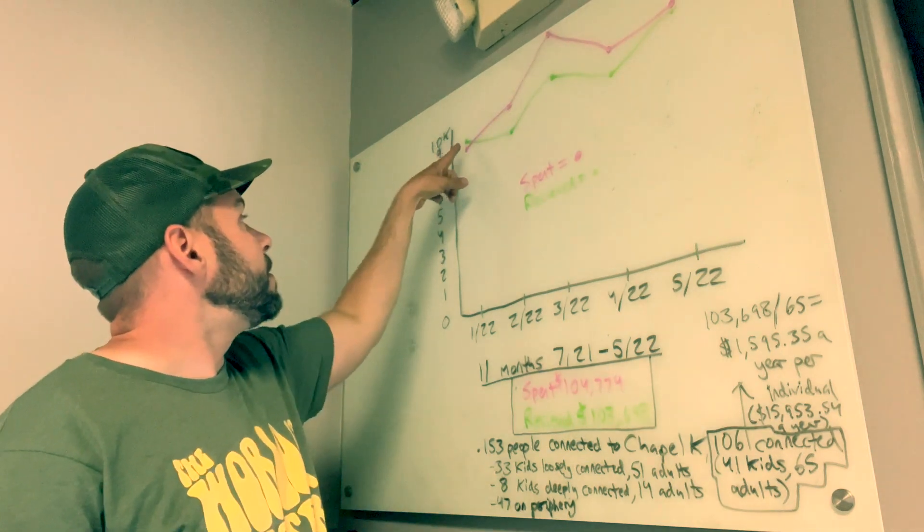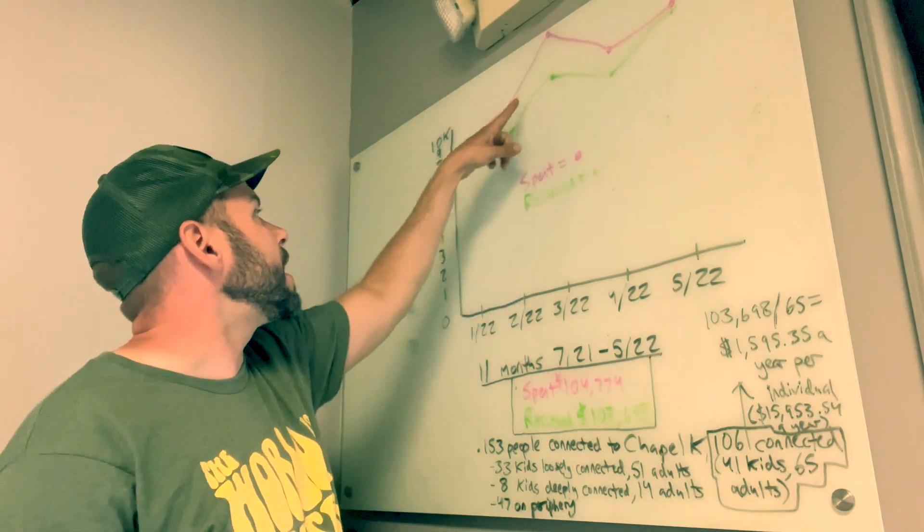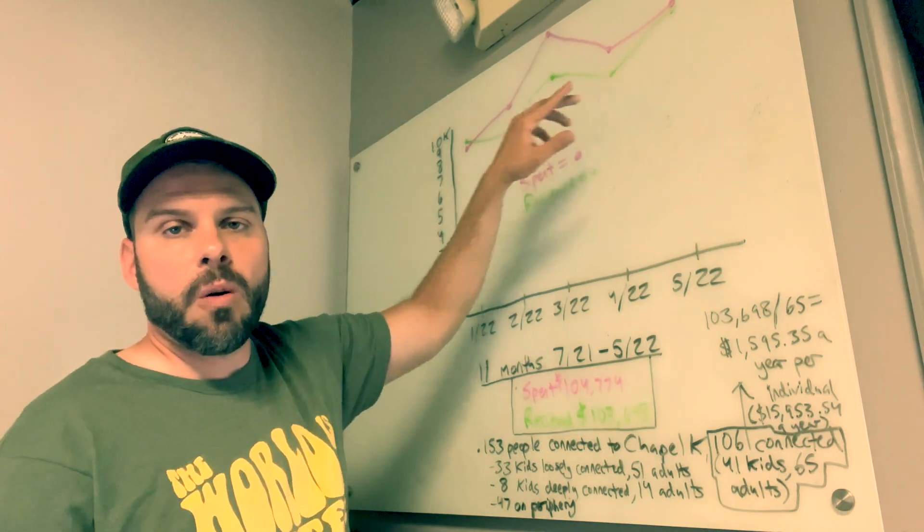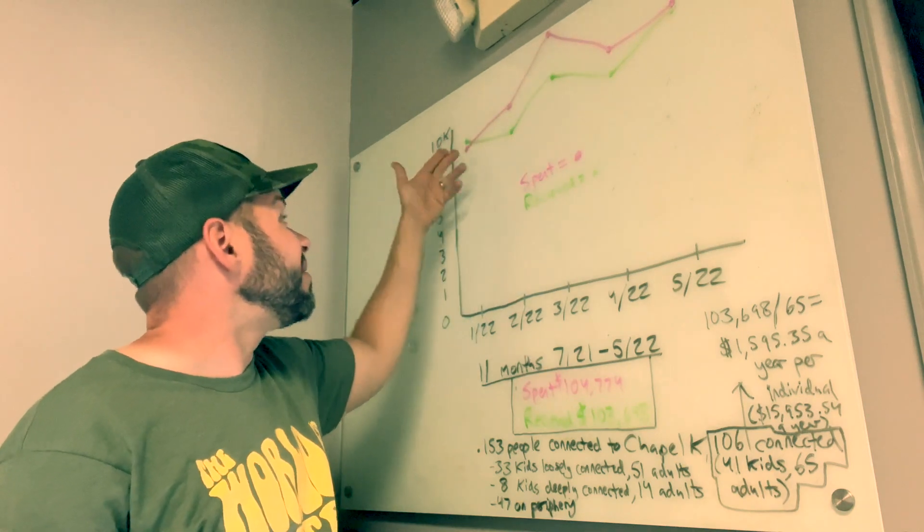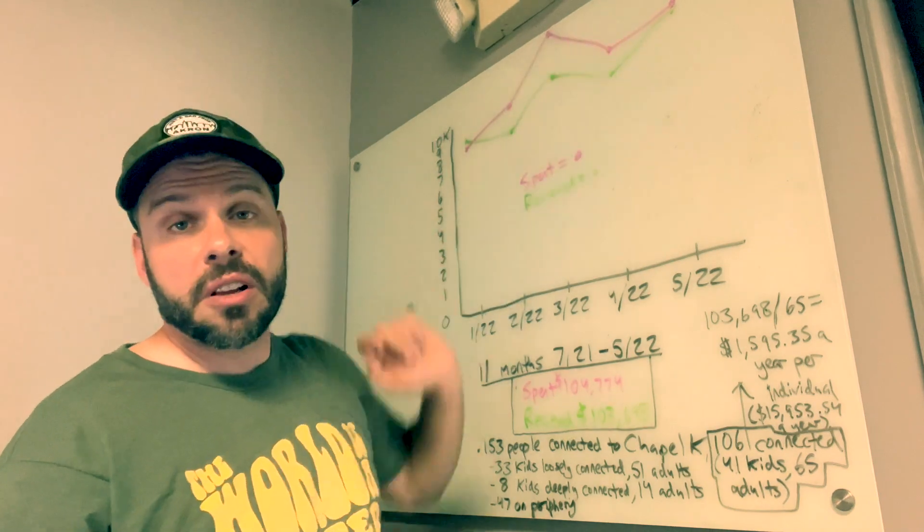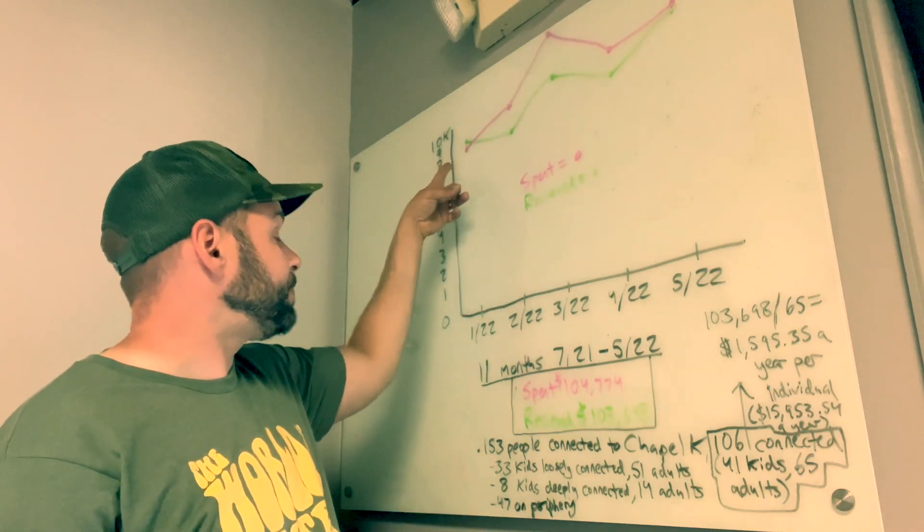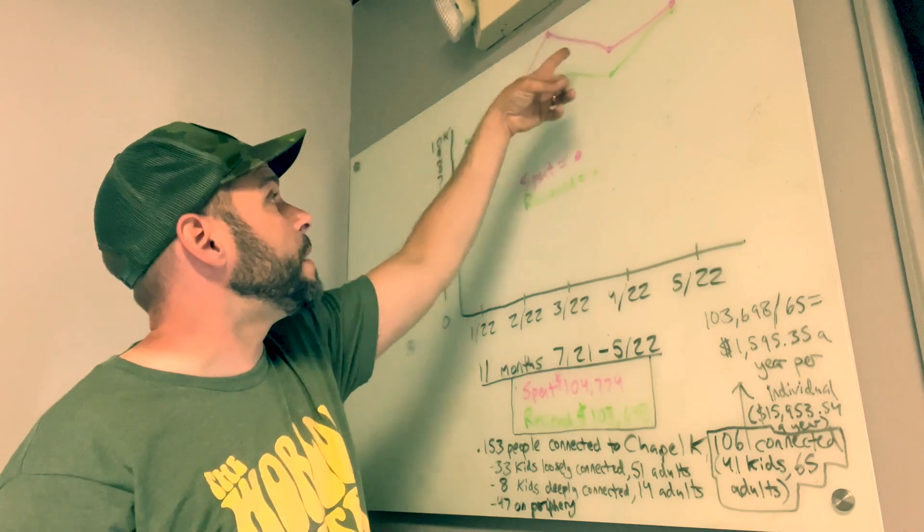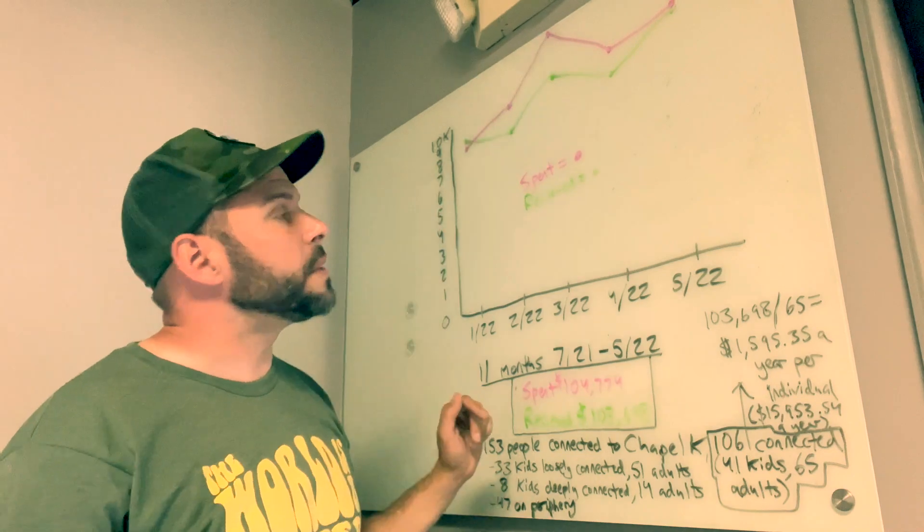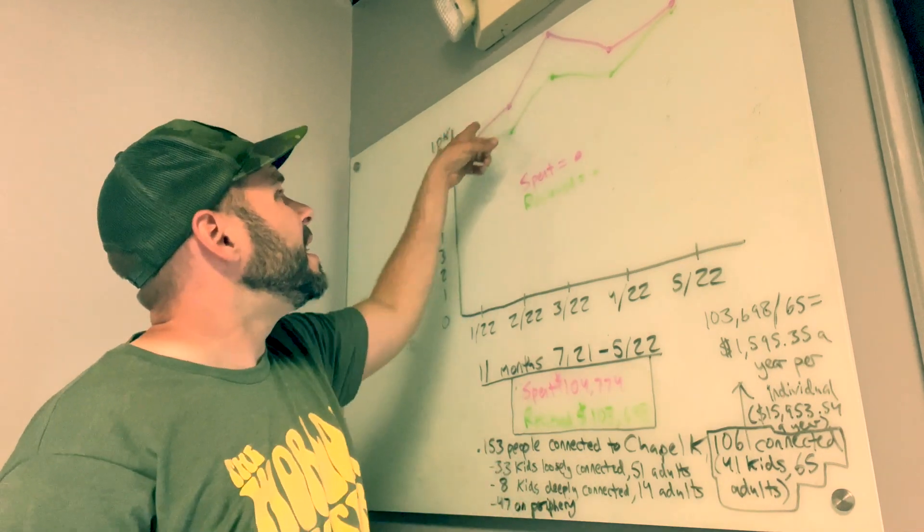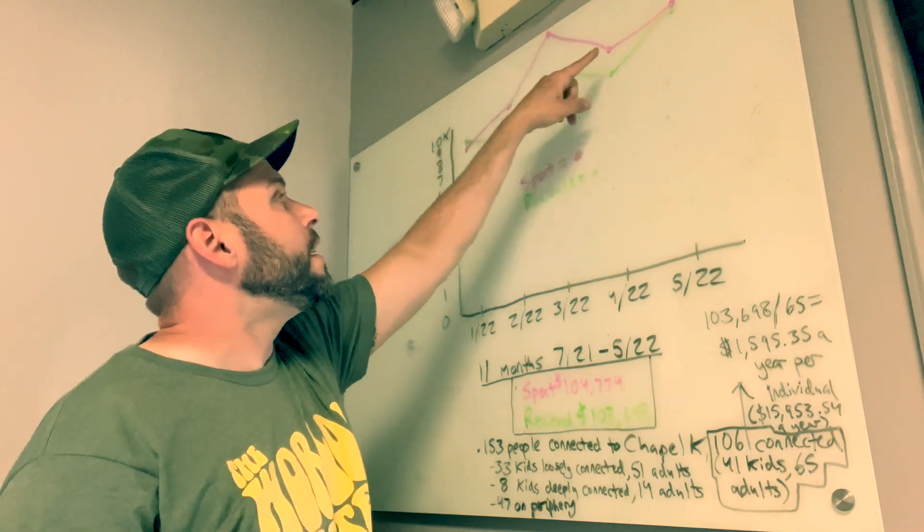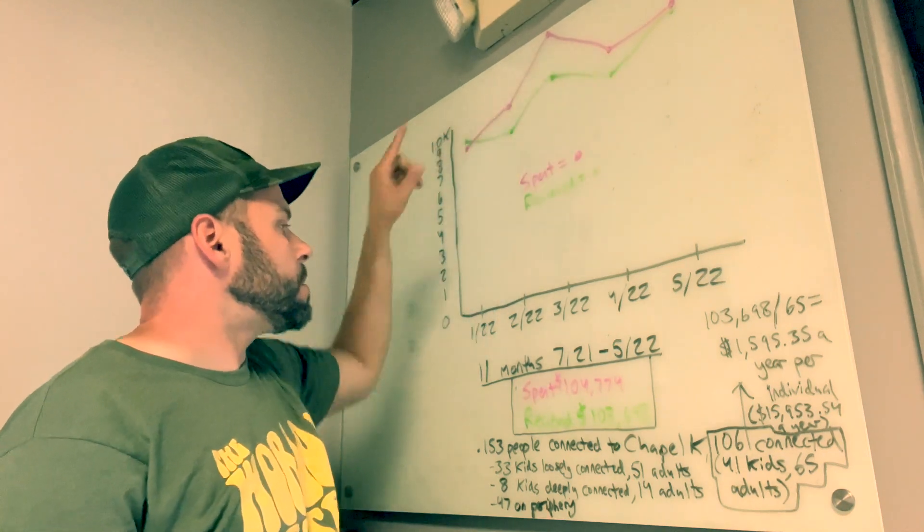You can see over the past five months where that line has been. Only in January really, and in May to some extent as well, was the giving over or close to what we spent. The line of spending went over in March. I'm actually working something out with that to see if that's correct. But obviously you can see we spent more than usual in March.